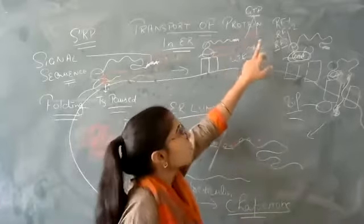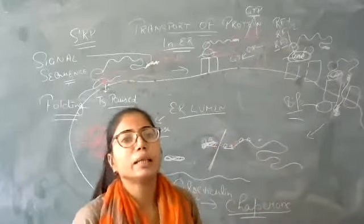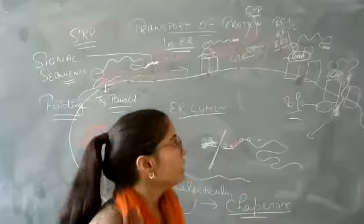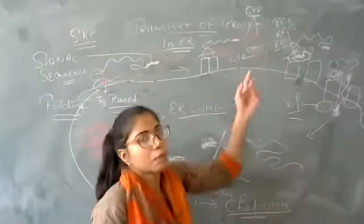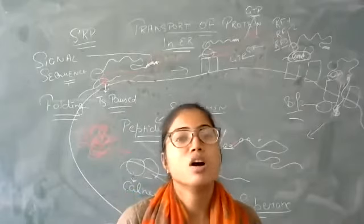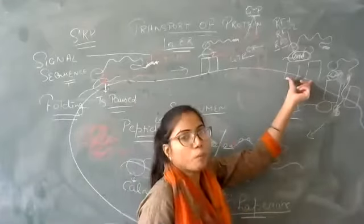The SRP and SRP receptor both bind GTP. When SRP and SRP receptor interact, GTP hydrolysis occurs. This causes the release of both SRP and SRP receptor, and the translocon opens.